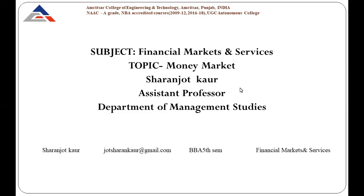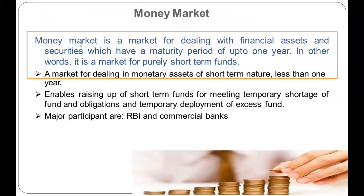The topic is the money market. A money market is a market for dealing with financial assets and securities which have a maturity period of up to one year. In other words, it is a market for purely short-term funds. The basic time period is one year — it is a market for dealing in monetary assets of a short-term nature, less than one year, enabling the raising of short-term funds to cover temporary shortages or temporary deployment of excess funds.